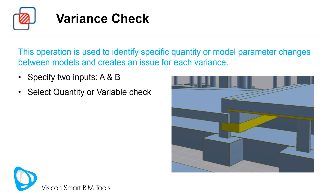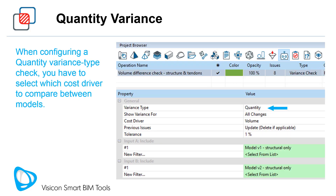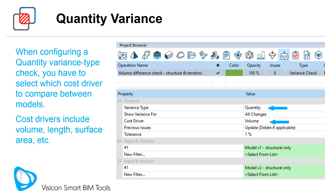The Variance Check operation is used to identify specific quantity or model parameter changes between models and creates an issue for each variance. The Variance operation always works off of two input sets, A and B. It can be configured to check for quantity or variable changes. When configuring a quantity variance type check, you have to select which cost driver to compare between models. Cost drivers include volume, length, surface area, etc. The example on the screen is configured to check the volume change between models.